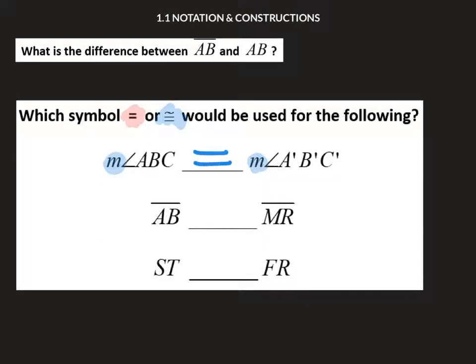In the next example, we're talking about the object AB and the object MR. In that case, when you talk about their value, you're going to talk about congruence because two objects are congruent and two measurements are equal.